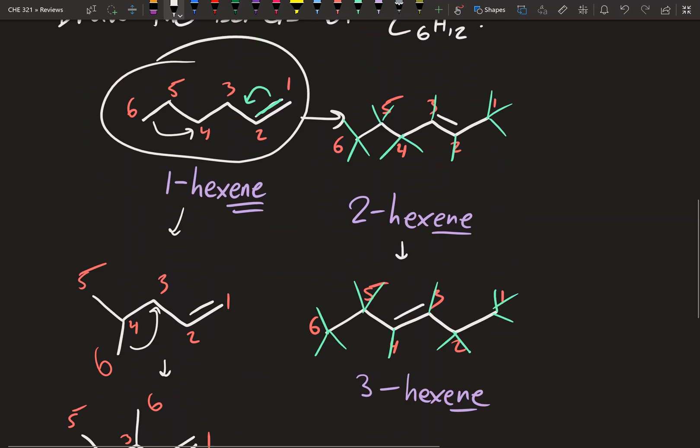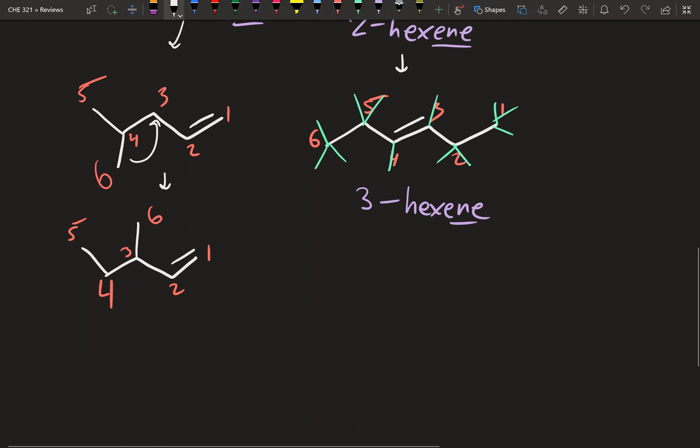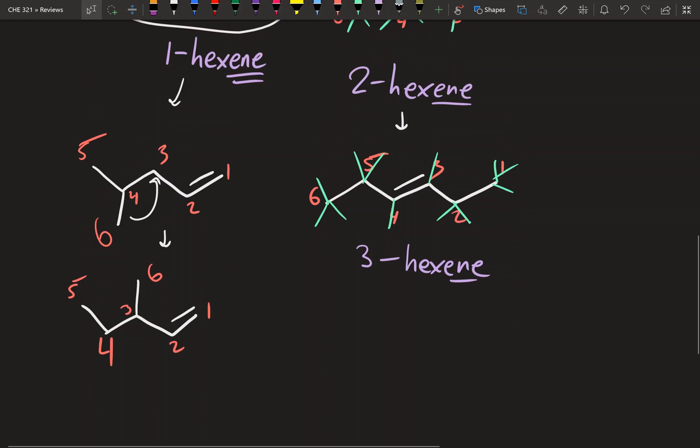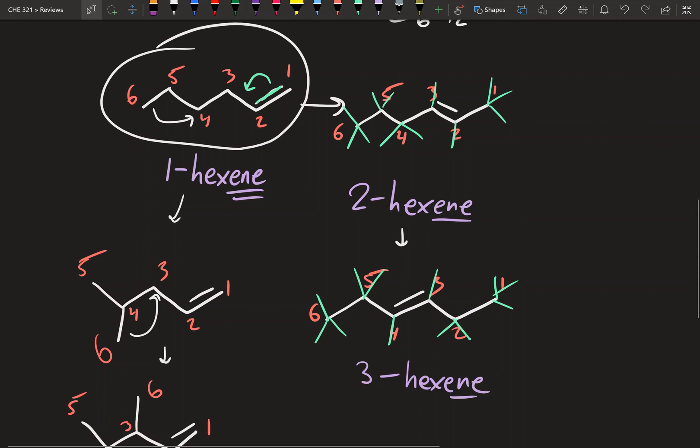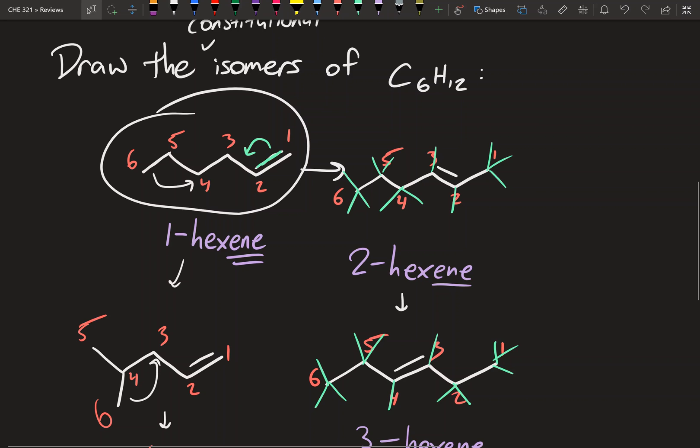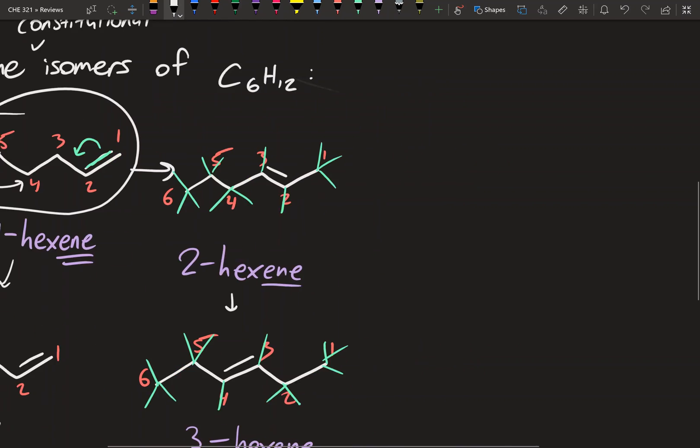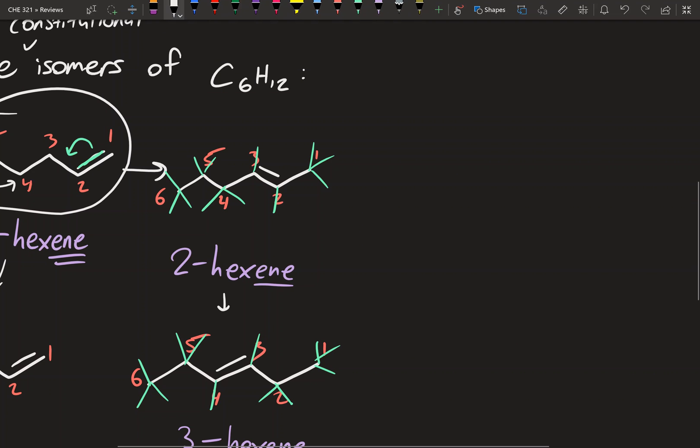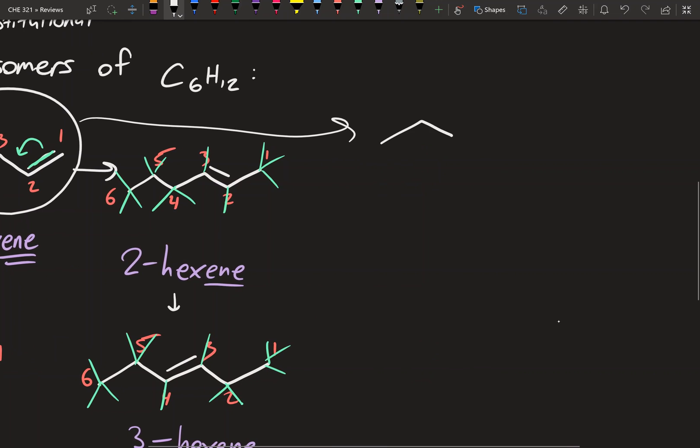So what else can we do? Well, we can't move any of the carbons anymore along the chain just because it would give us the same thing. So now you're going to have to start thinking a little bit more abstract and in the nonlinear way. And so what we can do, and this may not be obvious right away, is we can draw, instead of a chain, we can draw a closed ring structure.